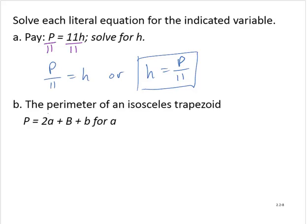So we identify the variable term. Now we have to remove any other terms from that side. I will start by subtracting capital B from both sides. So P subtract capital B equals 2a plus lowercase b.